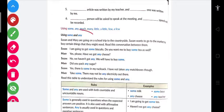As you remember, in the previous class I have taught till here - using some and any. So Suzanne and Mary are going on a trip to the countryside. Suzanne wants to go to the market to buy certain things that they might need. Read this conversation between them.